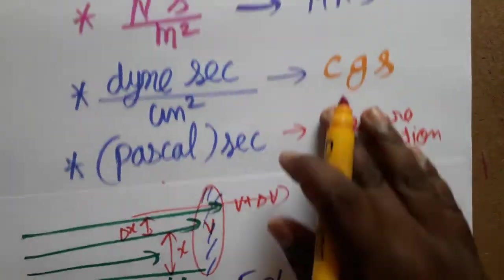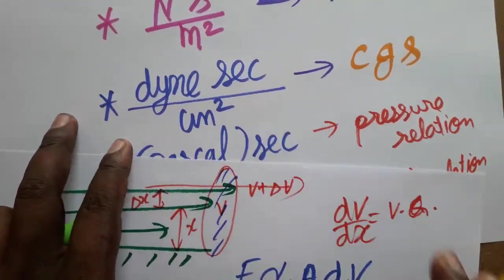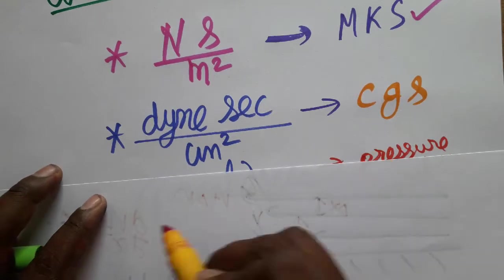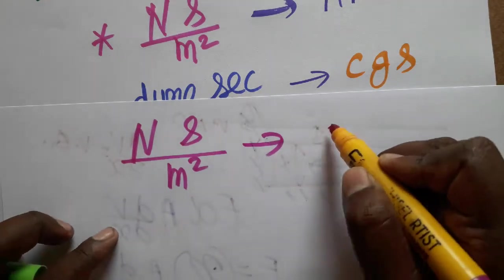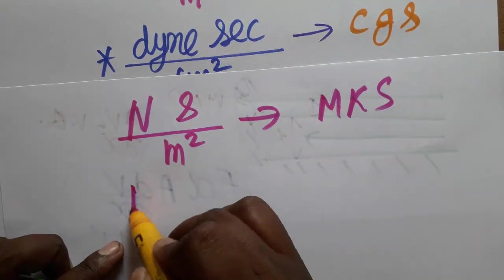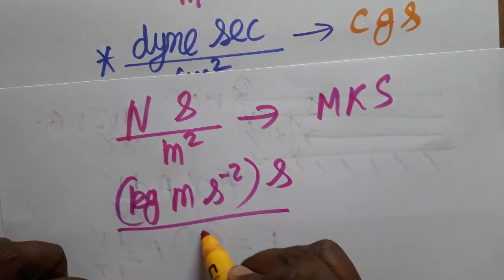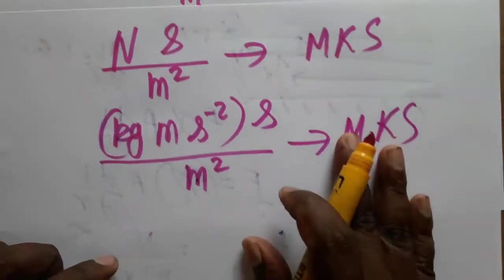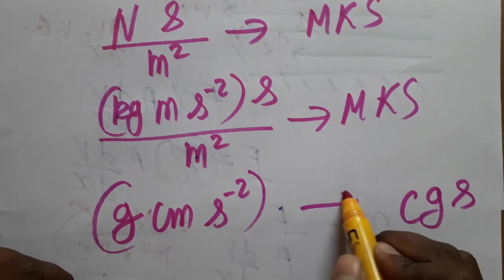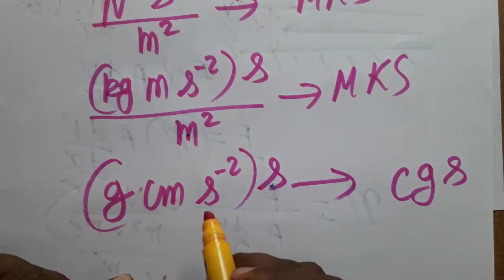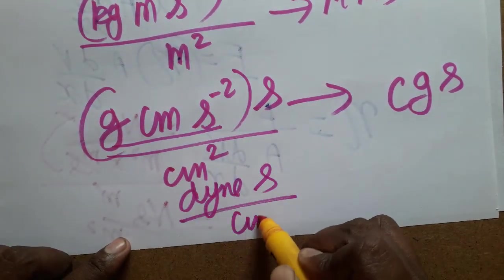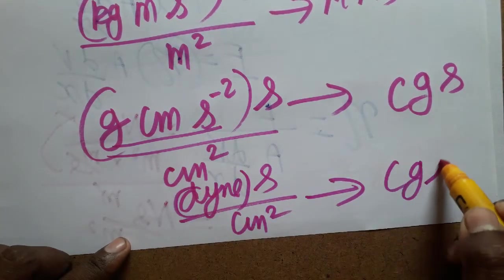The second unit is dyne·second per centimeter square, which is the CGS system equivalent. In the MKS system, Newton equals kg·m·s⁻². In the CGS system, the same unit becomes gram·cm·s⁻², which is called a dyne. So replacing Newton with dyne and meter with centimeter, we get dyne·second per centimeter square — the coefficient of viscosity unit in the CGS system.